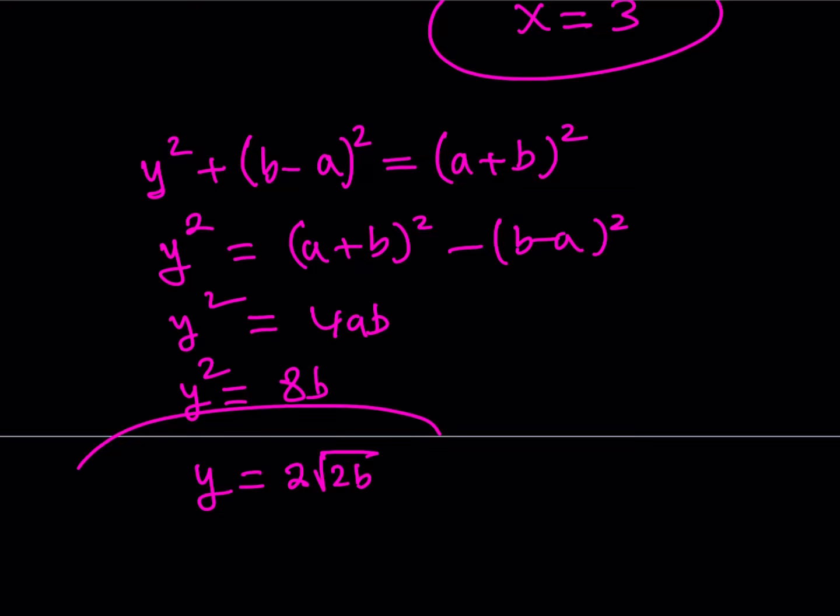y² is equal to 4ab. That means y is equal to 2 times the square root of ab. Or, you can just replace a with 2. This is going to give you 8b. Now, if you square root both sides, then you'll get y is equal to 2 times the square root of 2b. 2b or not 2b. Now, I can make this joke. I was waiting for this moment.